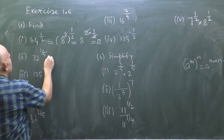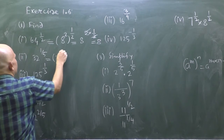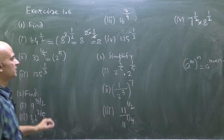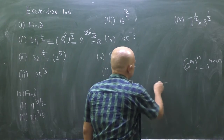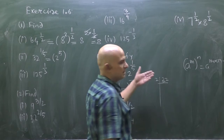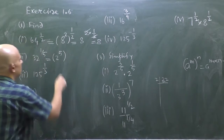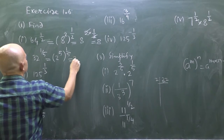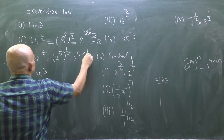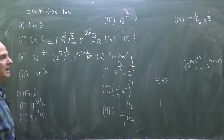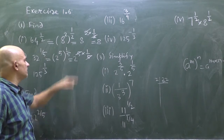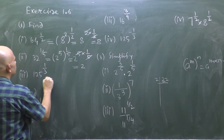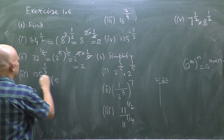Similarly, 32 can be written as 2 to the power 5. If you split up 32 by dividing by 2 to find its factors, you get 2^5. So 32^(1/5) = (2^5)^(1/5), which is the same as 2 to the power 5 × (1/5). The outcome is 2.